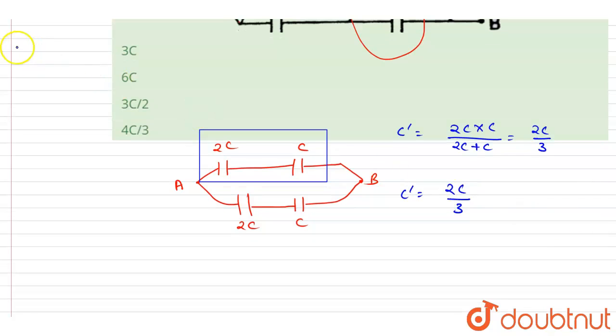Now they are connected in parallel, so finally I will write down the equivalent capacitance between A and B is C' plus C', that is 2C', which is 4C divided by 3. And this is the answer. Now you can check for the option here, 4C by 3 is D. D is the correct one.